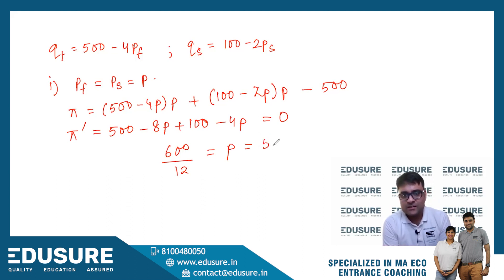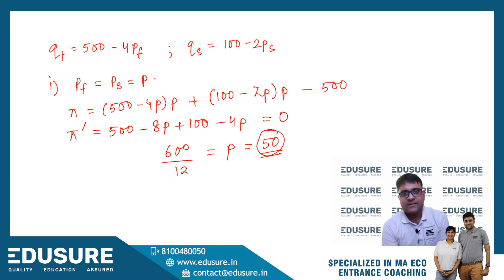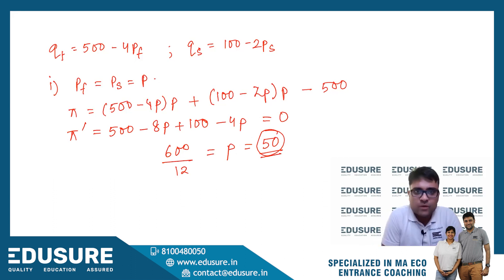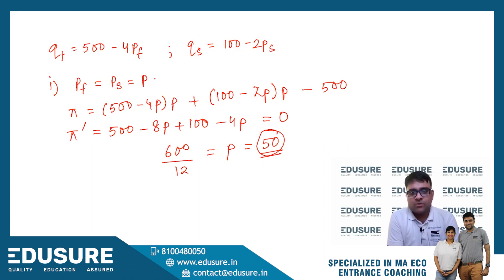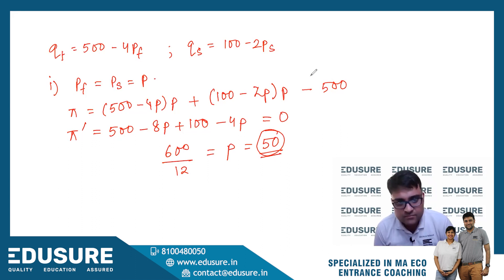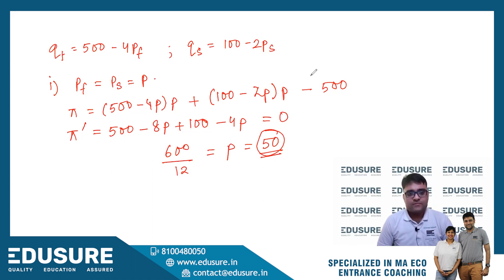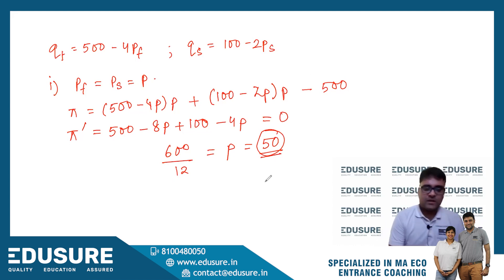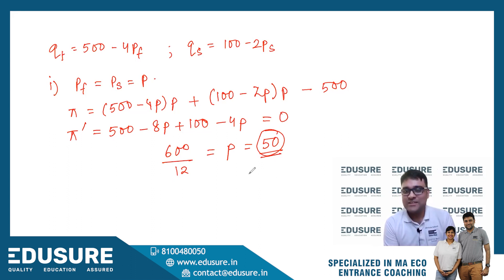This is what most of you have got. How many of you agree that this is the price — 600 by 12 — p equals 50? How many of you agree? If you have any reservations, put it in the chat box. If any of you say that this is not the answer, note that this may indeed not be the answer.